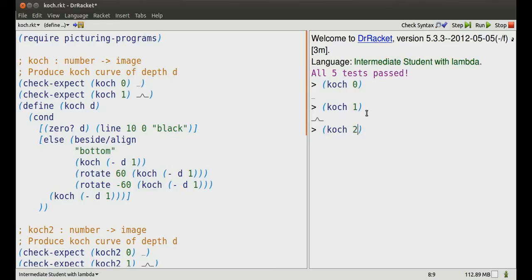Koch 2. Well, it's built up from what we already know. We'll look at the definition of the function. Replace all the d's by 2 now. The first question says, is 2 equal to 0? Of course not. So we move along to the else, which says,